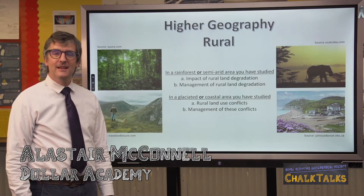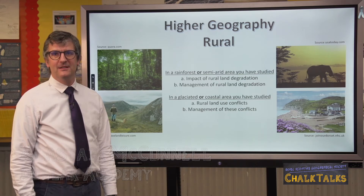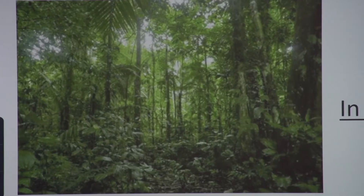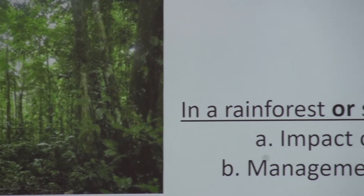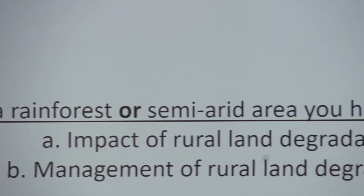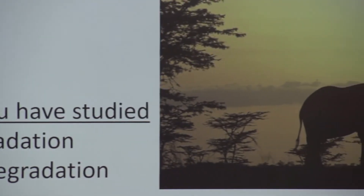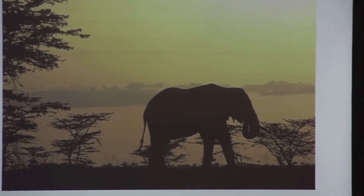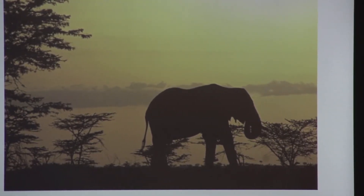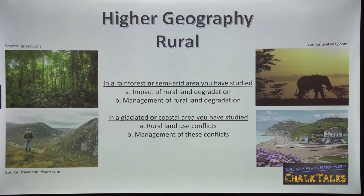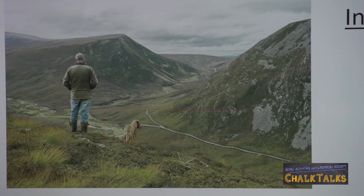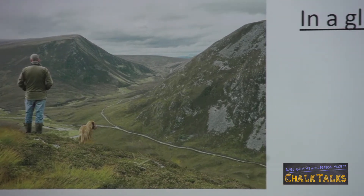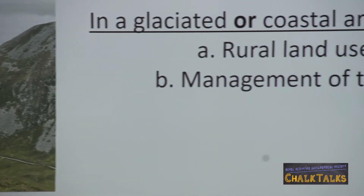Welcome. In this video I will be summarising the rural topic in Higher Geography. The first part of this topic is about land degradation in either a rainforest or semi-arid area. In this video I will focus on the semi-arid region option, however you may have studied rainforests. The second part of the topic is focused on the UK and is about land use conflicts in either a glaciated or a coastal region. I will be using the Cairngorms as a case study, but again you may have studied different areas.